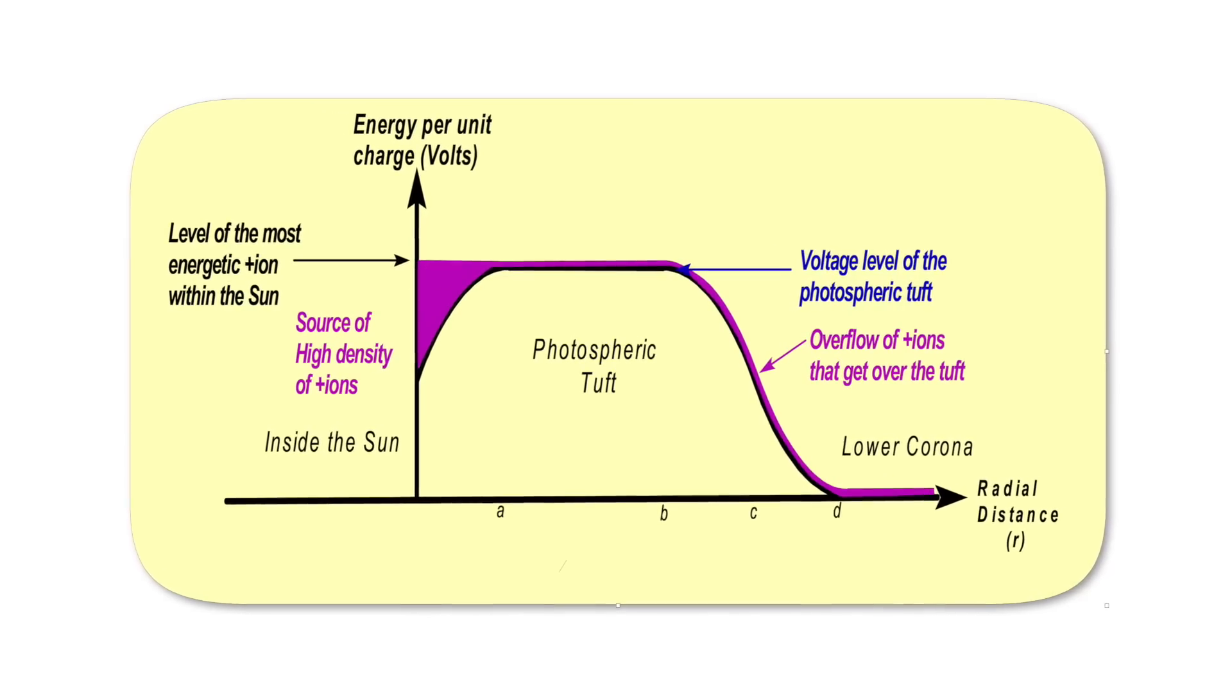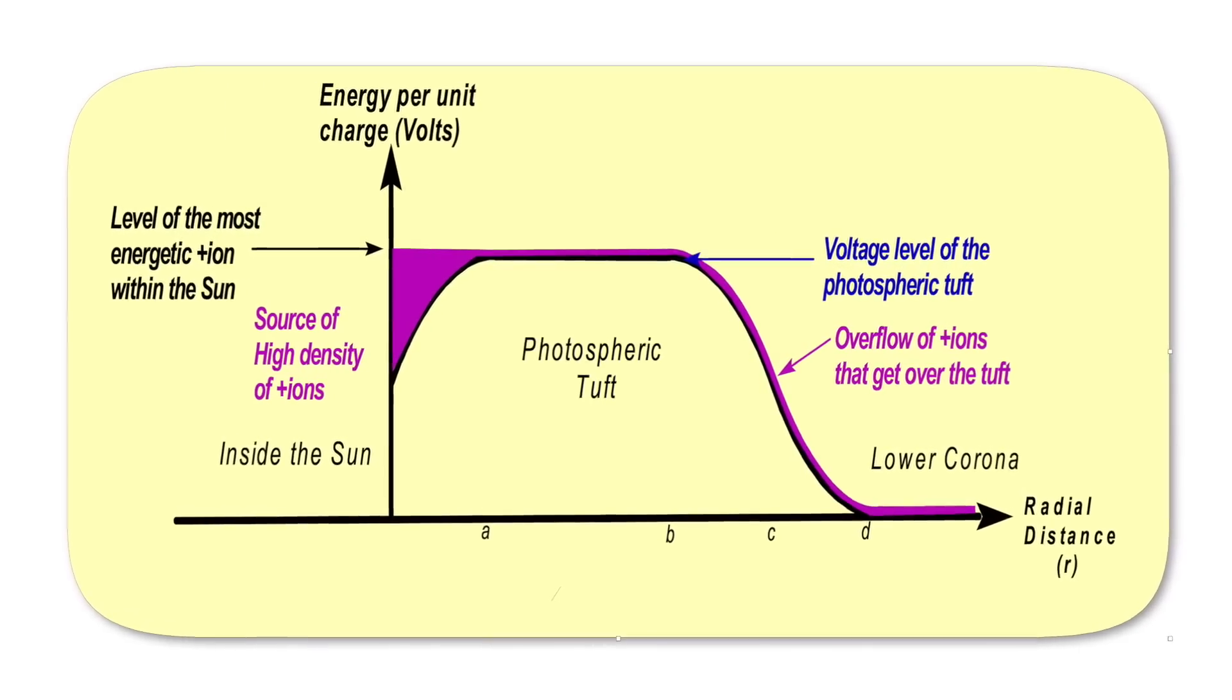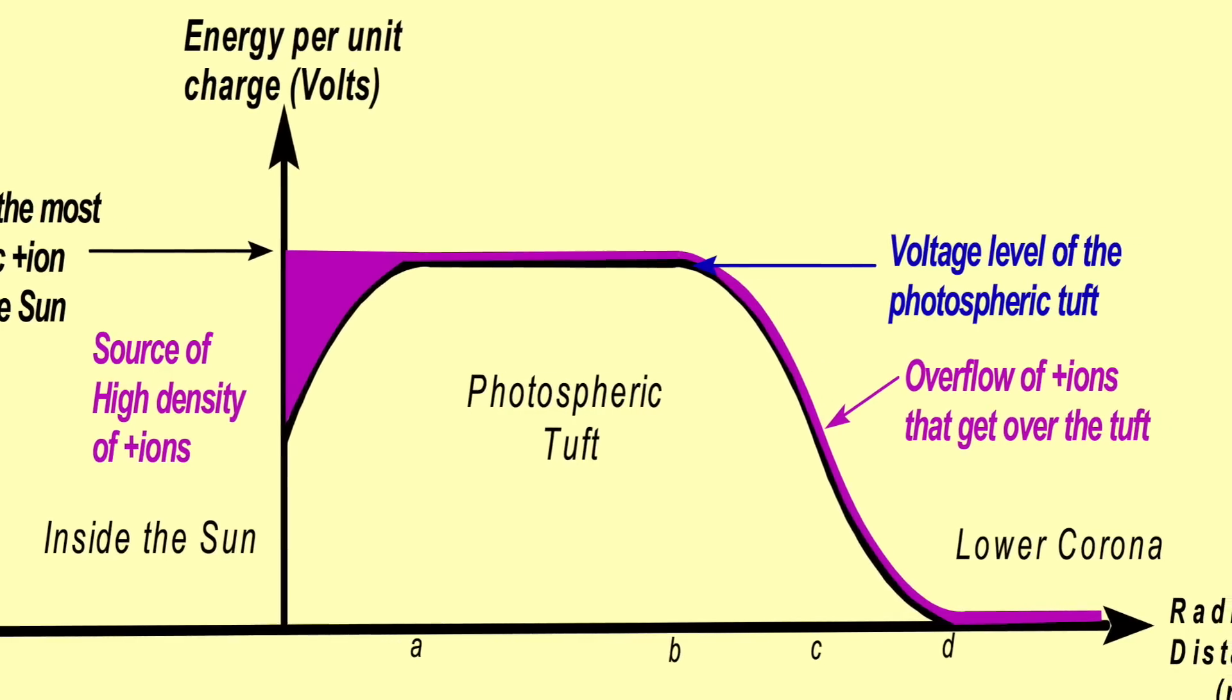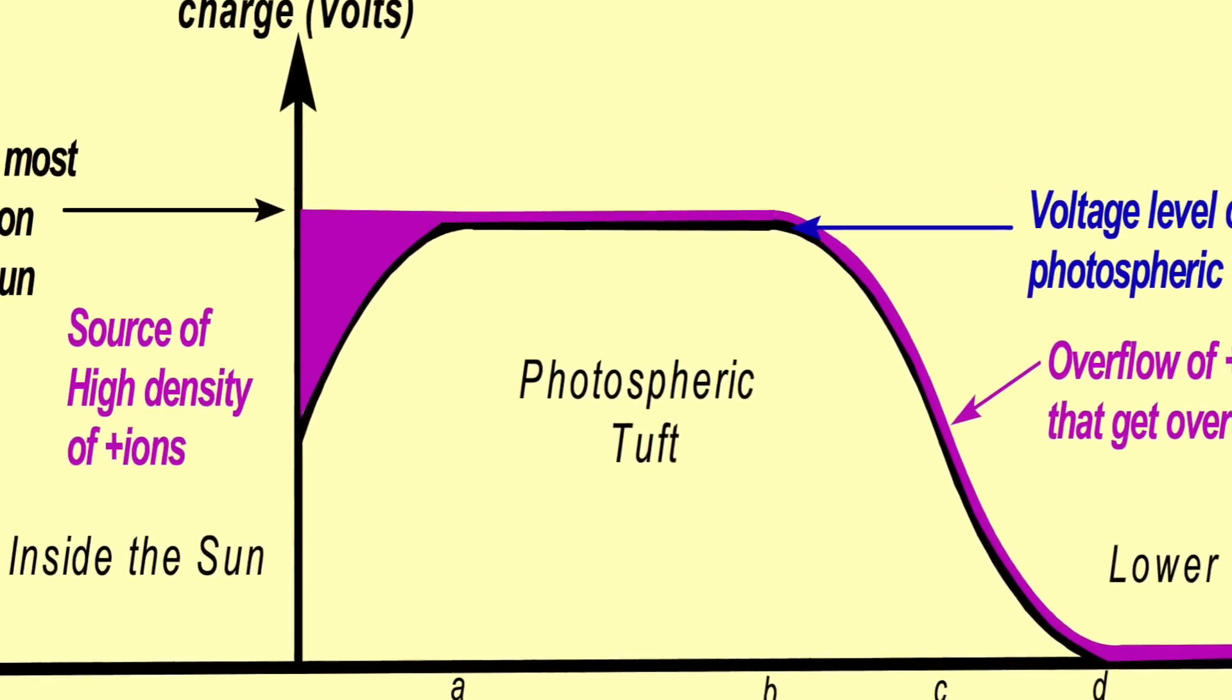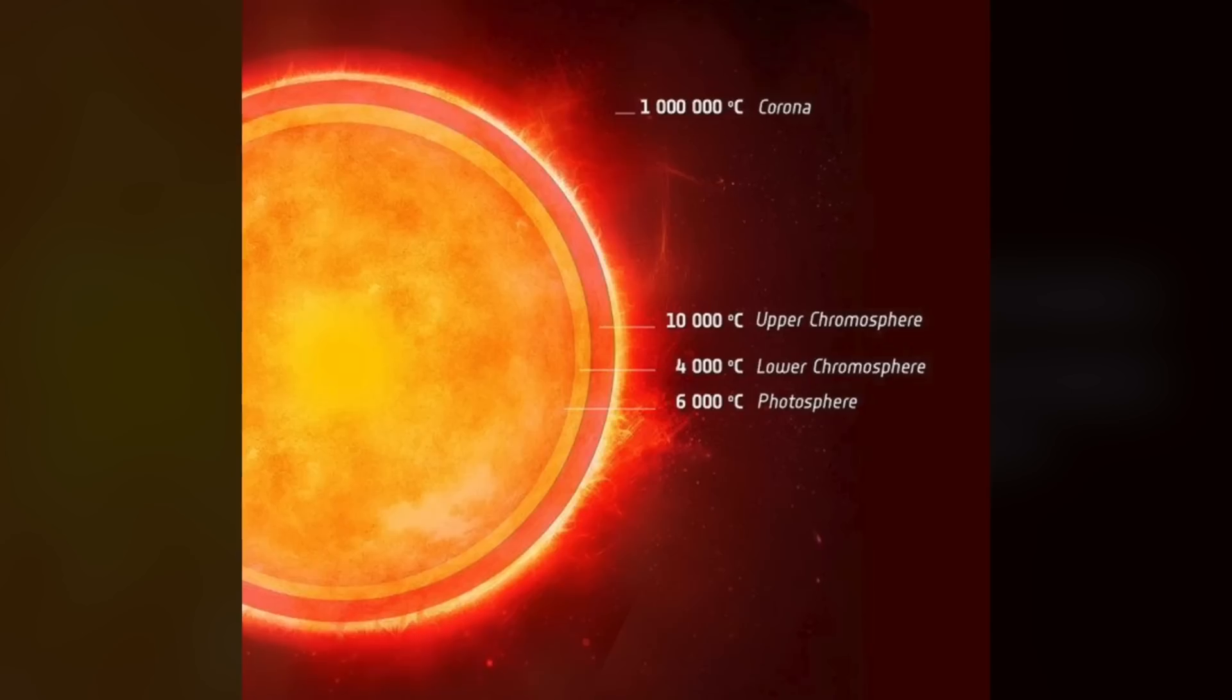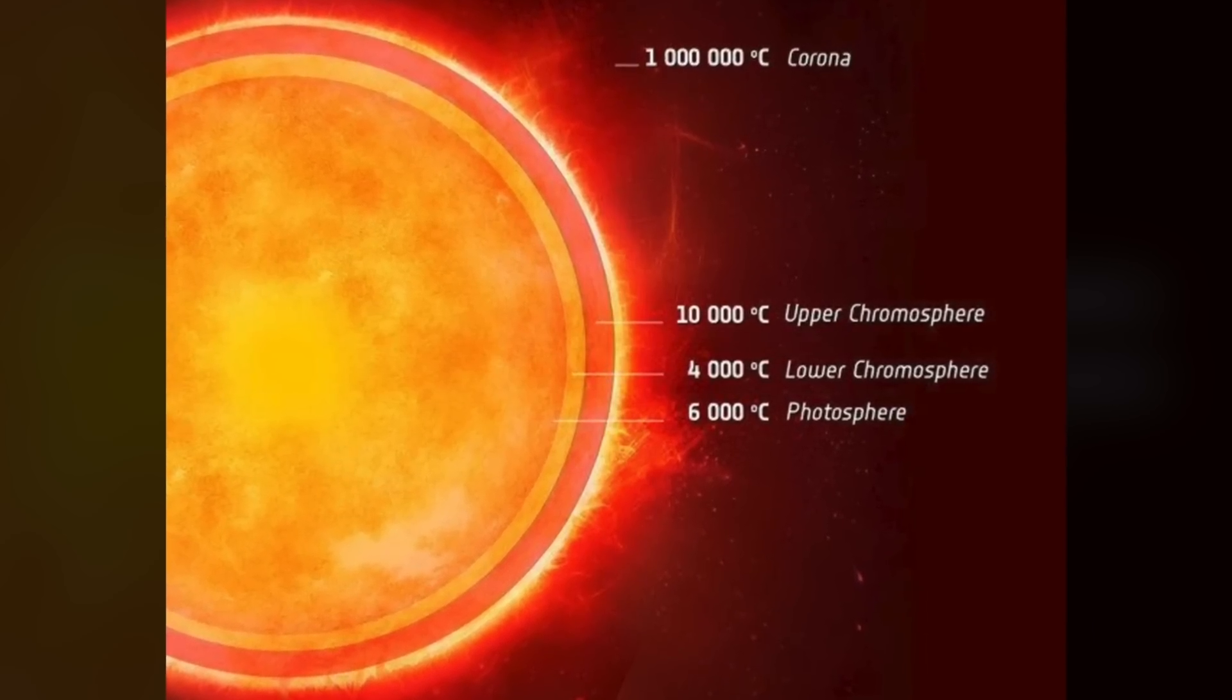This next image shows what happens normally when the level of the most energetic ions within the body of the sun have just enough energy to leak over the top of the voltage dam. The purple is the water and you can see it just being a little higher than the photospheric tuft and it's leaking over the top. If the effective height of the dam can be varied, the volume, that's called the density of flow, can be varied. This flow, as it passes out of the image toward the lower right, experiences turbulence. This is measured as the temperature of the ion flow. This creates the anomalous extremely high temperature of the lower corona that begins here, something like 2 million Kelvin.